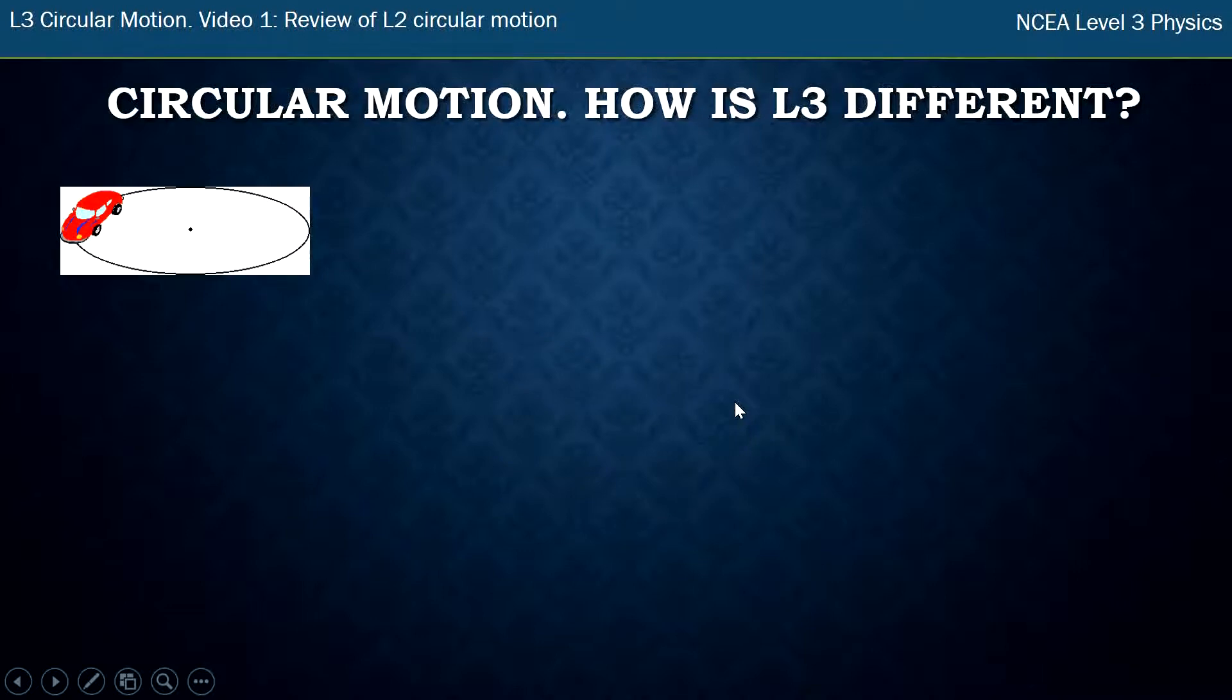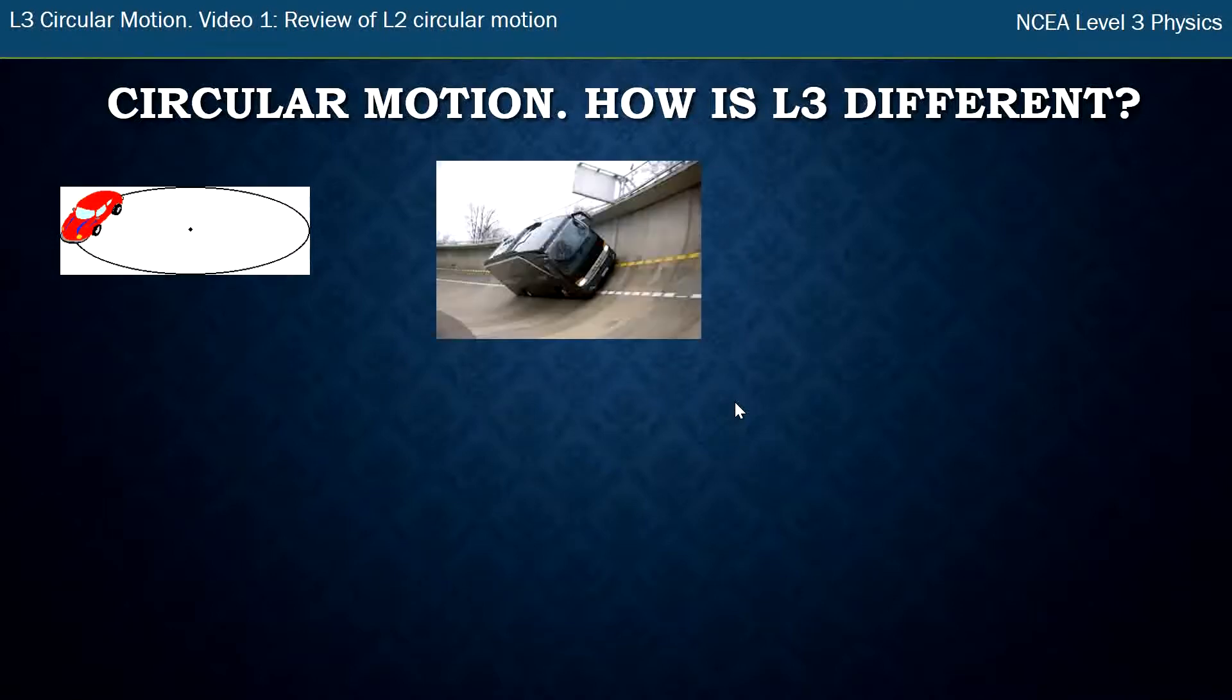So how is Level 3 different than what we've just been talking about? Well, in Level 2 we just had things going around nice horizontal circles. This year we've got cars going around banked turns, so going around a sort of circular motion still, but the road itself is no longer horizontal, it's on an angle, a banked turn.